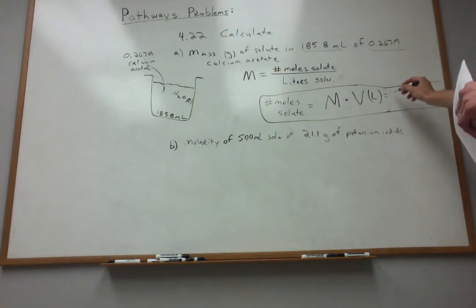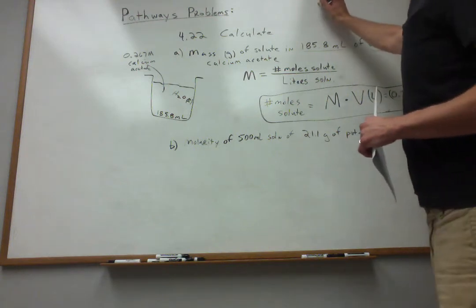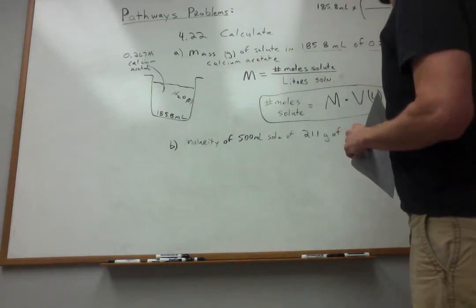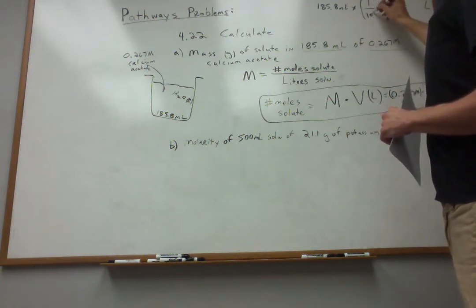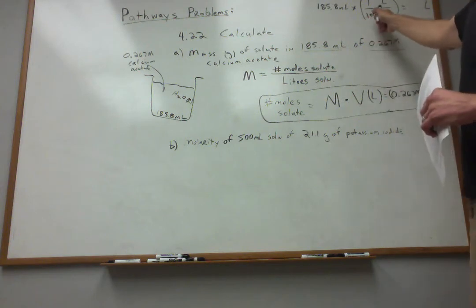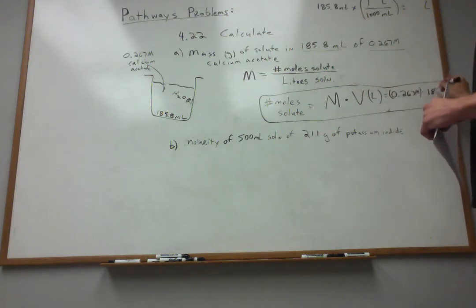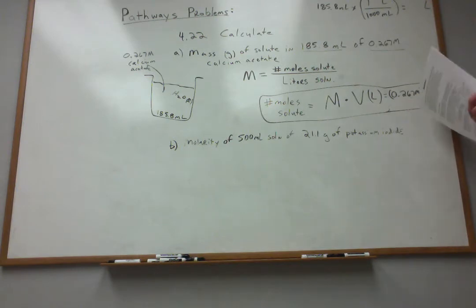Now, in this particular case, I was told that the solution is 0.267 moles per liter. And I've got 185.8 milliliters. Now, 185.8 milliliters is the volume. But when I use the volume in this equation, I want it to be in liters. So I'm going to have to do a unit conversion. And hopefully by now we all know that 1,000 milliliters is 1 liter. And consequently, I can move the decimal place three spots and realize that 0.1858 liters corresponds to 185.8 milliliters. So I've got 0.267 moles per liter times 0.1858 liters.